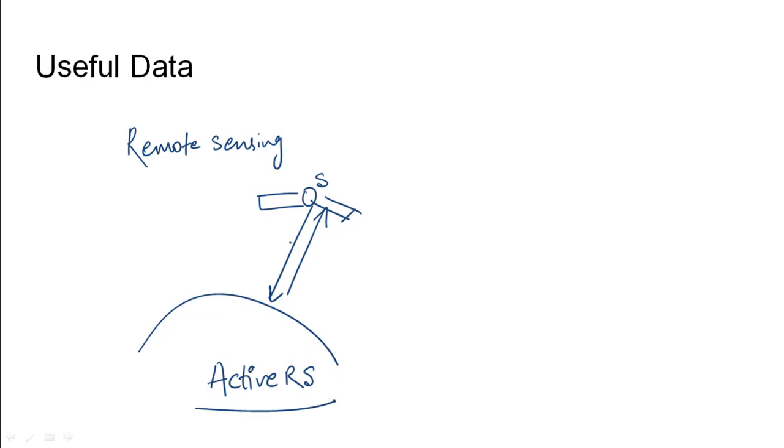But in the other case, which is called passive remote sensing, we have the sun sending heat rays and light rays on Earth. And then the reflected energy - it may be temperature, humidity, or some kind of climatic characteristic - may be measured by the satellite orbiting in space.